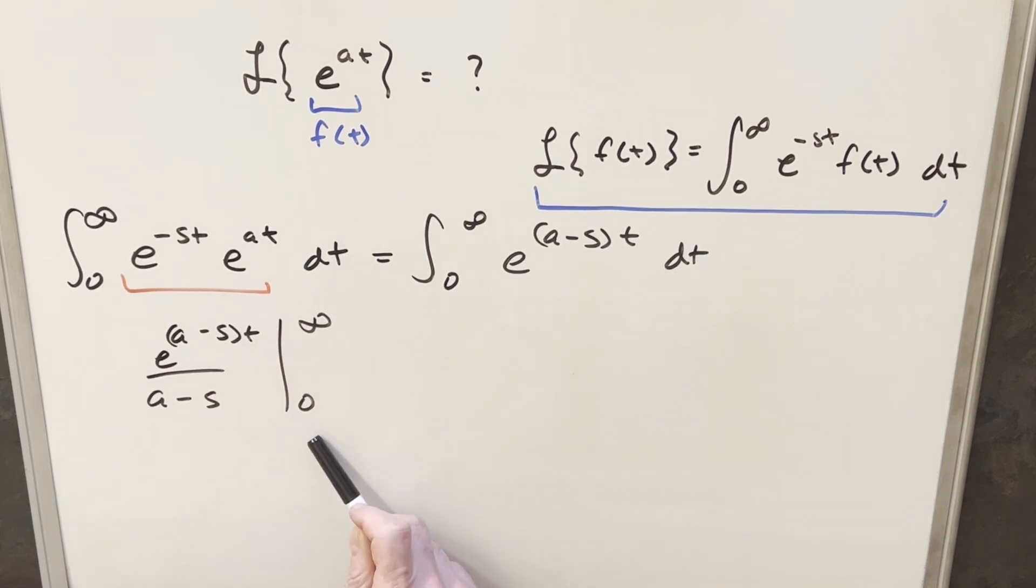Now, when we evaluate this, we just need to be a little careful because we're evaluating at infinity here. And we don't really know what these constants are at the moment. So let's do this as a limit. We're looking at this as the limit as t approaches infinity of this whole expression.